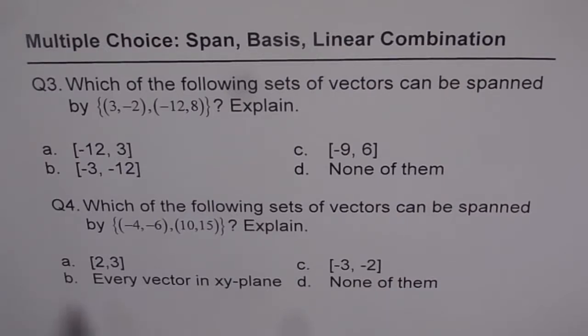So here we have choices as {2, 3}, every vector in xy-plane, {-3, -2}, and none of them. So these are the choices. Make a choice and then look into my suggestion.